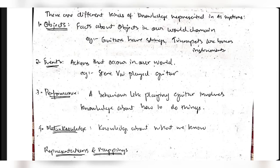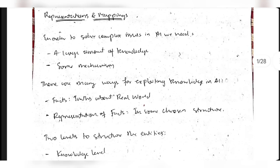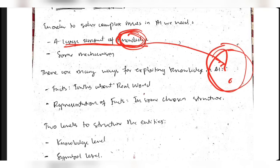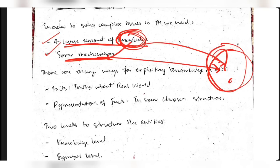Now we have to map some things. To solve any issue, we need two things: first, a large amount of knowledge so we can apply it to the problem; second, some mechanism to apply that knowledge. Just having knowledge is not sufficient - you also need the mechanism to solve any complex issue.